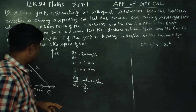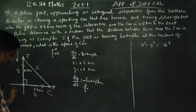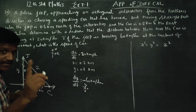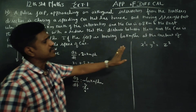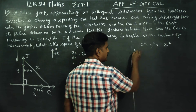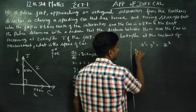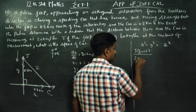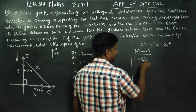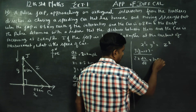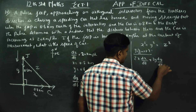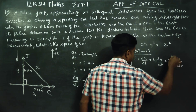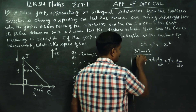All the quantities are variable. When you differentiate with respect to t, all quantities are differentiated: 2x(dx/dt) + 2y(dy/dt) = 2z(dz/dt). The 2s cancel out.